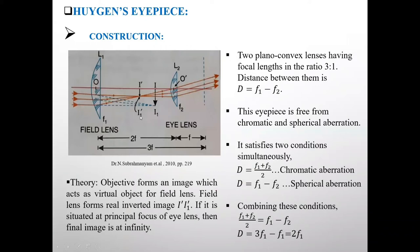See, this is construction of this eyepiece. In this image, we can see two plano-convex lenses L1 and L2. Now their focal lengths are in ratio 3:1. This is the ratio of their focal lengths, and distance between them is D = F1 - F2. F1 is 3F and F2 is F, so difference between these two is 2F. So this distance between these two lenses is 2F.